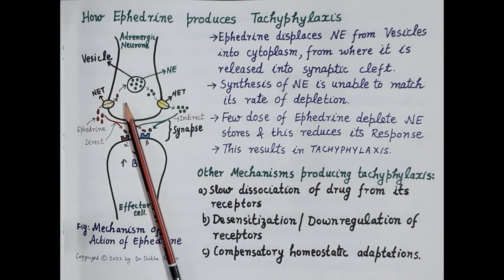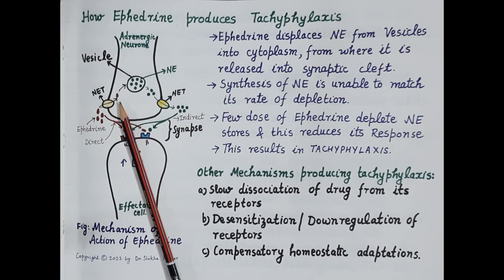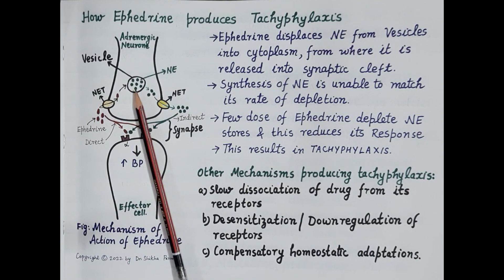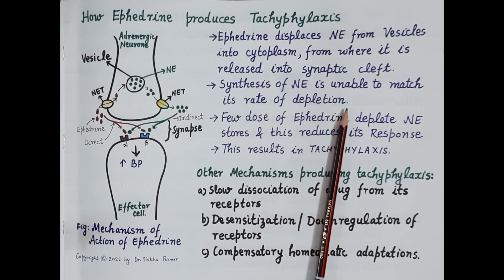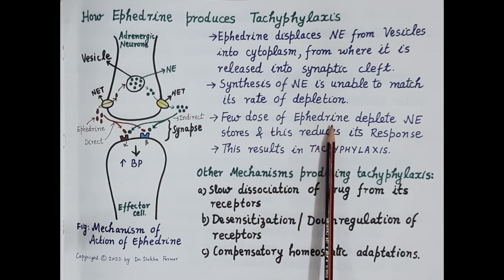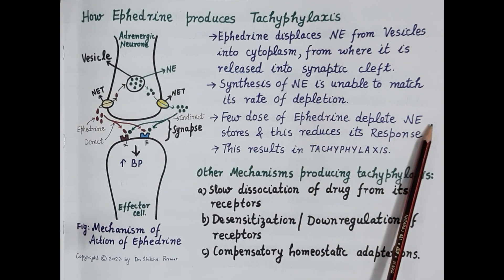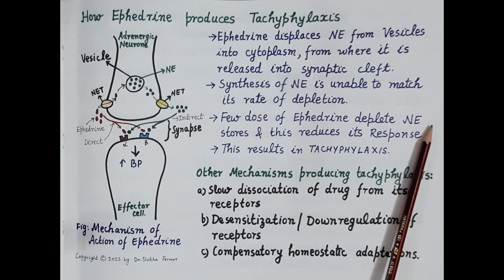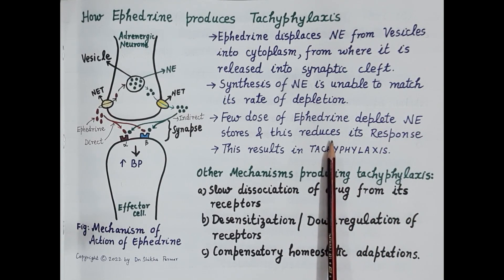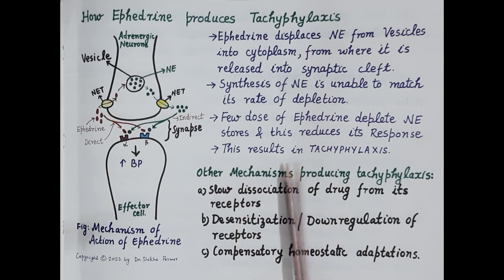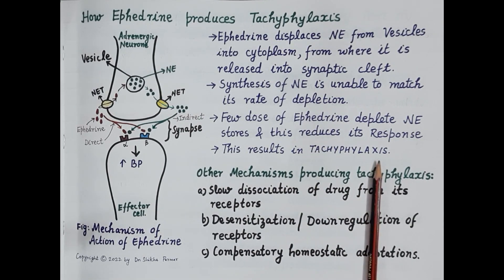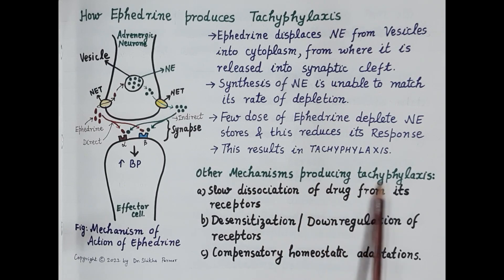It is very important to understand that ephedrine depletes norepinephrine stores, and synthesis of new norepinephrine is unable to match its rate of depletion. A few doses of ephedrine deplete norepinephrine stores, and once the stores are depleted, the response to ephedrine reduces. Since norepinephrine stores are depleted, the reduced response to ephedrine cannot be increased by increasing its dose, and this results in tachyphylaxis.